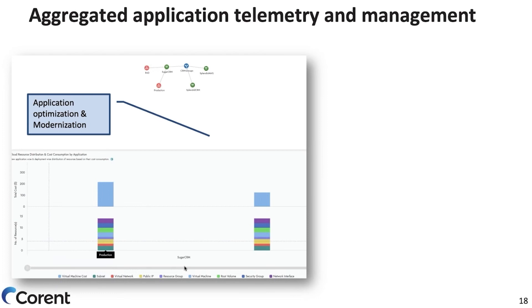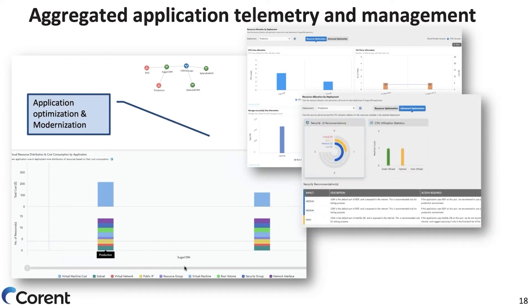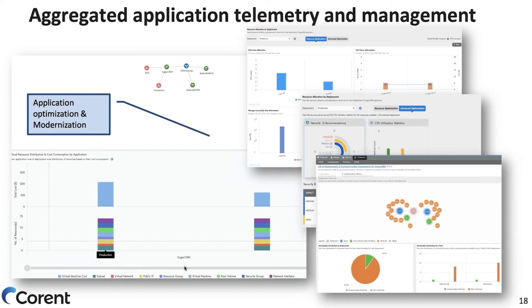When you look at aggregated application telemetry, you group applications and see all the different deployments. You can get full details and see whether an application as a whole could be optimized and how — then present that to your customers. If there are multiple applications, you can look at each one and present its collective view, including advanced optimization in terms of security or utilization statistics. Any modernization capability you want to bring to the table — containers, PaaS, serverless — creates additional work and services you can offer to clients.